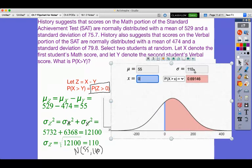Mean is 55, standard deviation is 110, probability that my distribution is greater than this X value of zero. And you see that it's 69.146% of the time.